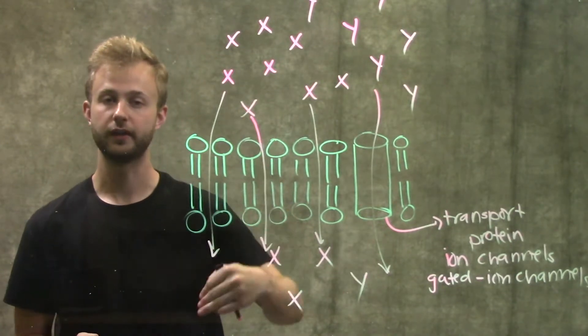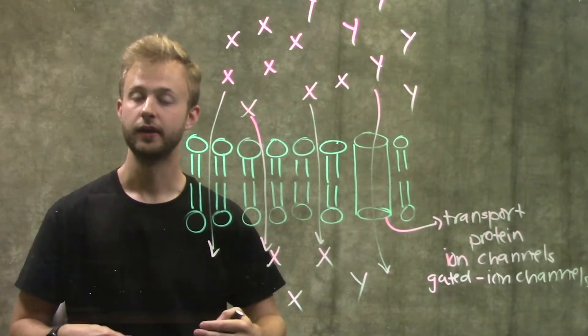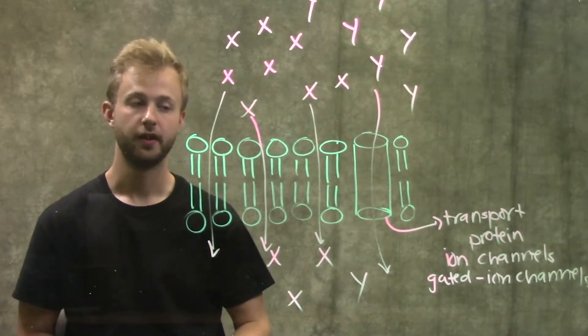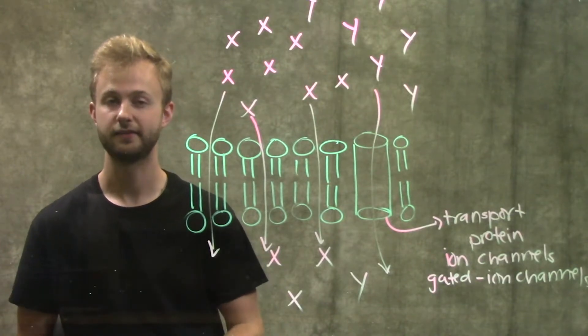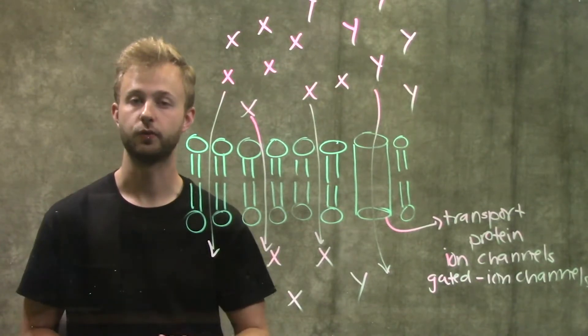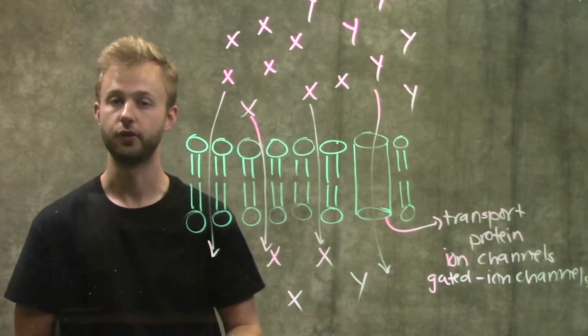But when a molecule can move directly through the membrane from high to low, then that is just diffusion. Both diffusion and facilitated diffusion are kinds of passive transport, which requires that the cell use no energy.